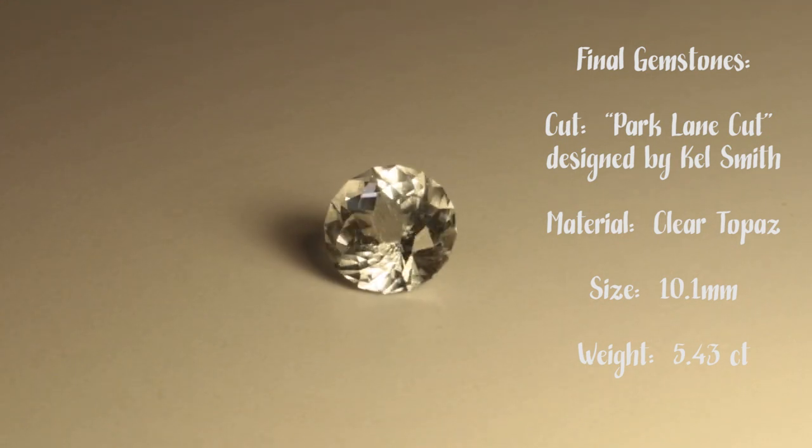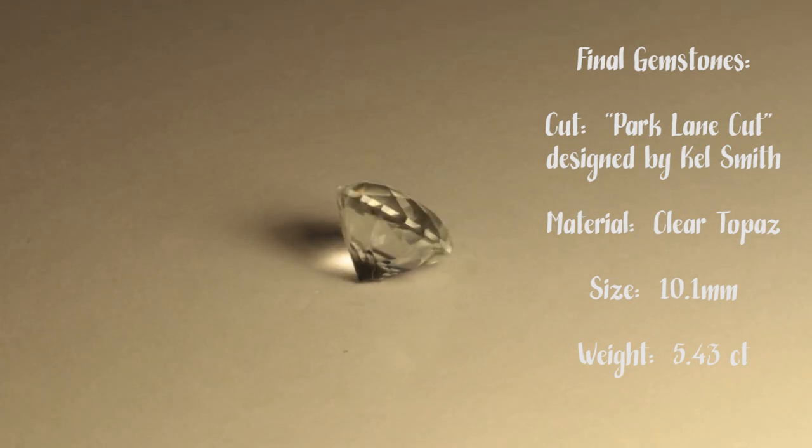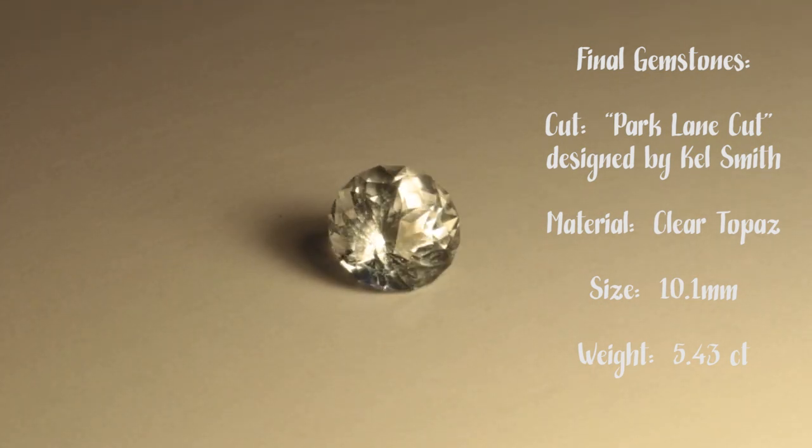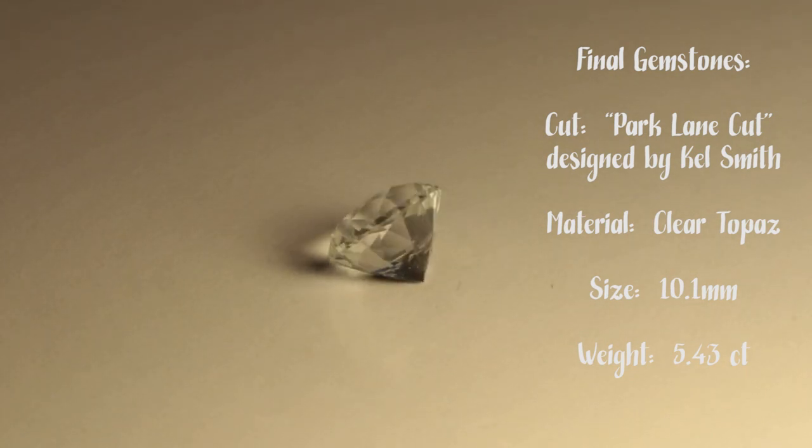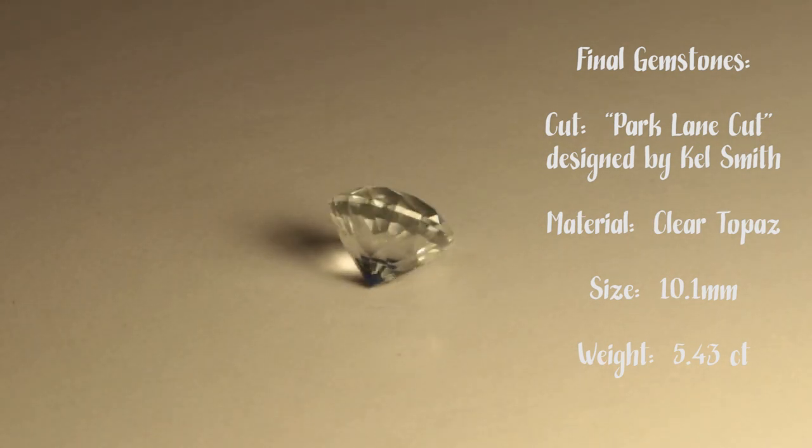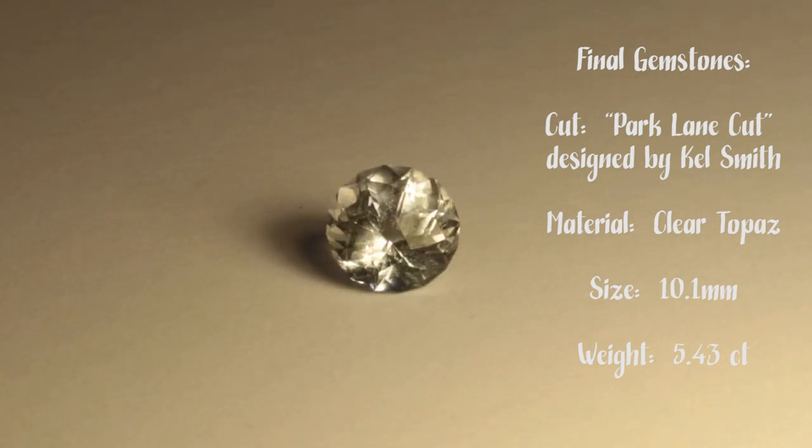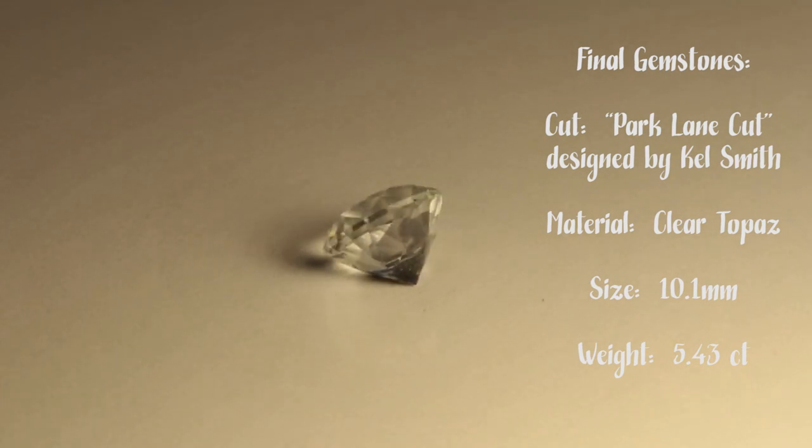And I was right about guesstimating the final weight of this gem, which weighs in at 5.43 carats, based on a starting weight of just under 30 carats. For me, a good rule of thumb is that I'll end up with about one-fifth the weight of what I start with, depending on the shape of the rough that I start with, but generally about one-fifth.